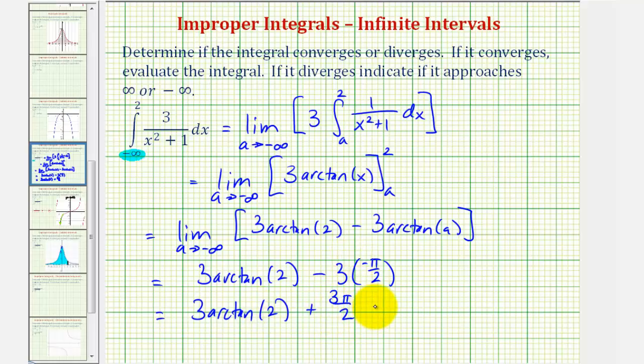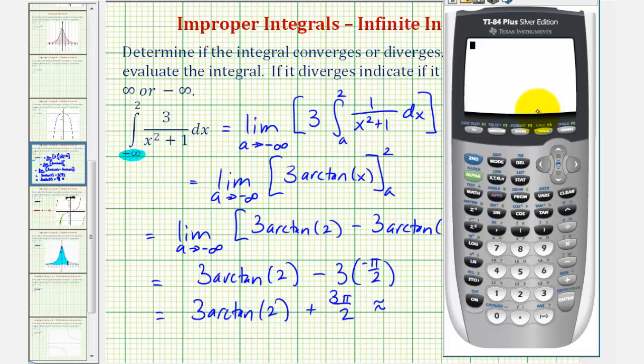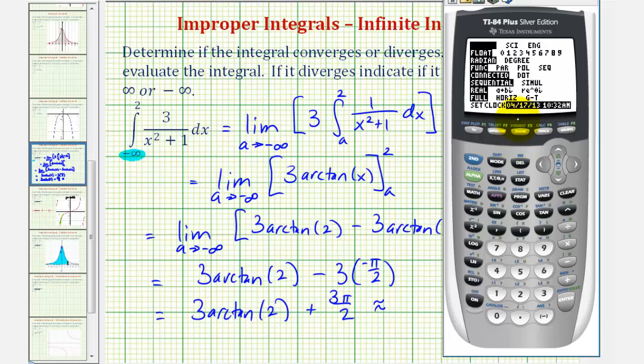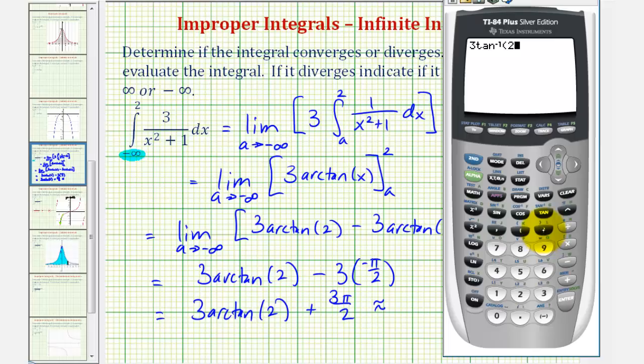Let's also get a decimal approximation though. So we'll go to the graphing calculator. Let's make sure that we're in radian mode. So we'll press the mode key. Notice how radian is already highlighted. Let's go back to the home screen, and we'll type in three second tangent for arctangent two, plus three pi over two. Pi key is second, and then the exponent key, or the caret key, divided by two. So to four decimal places, this would be approximately eight point zero three three eight.